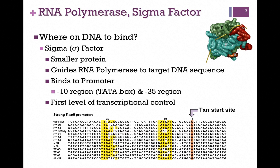What we have at the bottom of the screen here is a sequence alignment for some strong E. coli promoters. They're strong E. coli promoters because transcription is very successful from these promoters — in other words, the sigma factor binds tightly to these promoters. Let's look first at that transcription start site, denoted as plus one and highlighted in brown here. This will be the first nucleotide in the message.